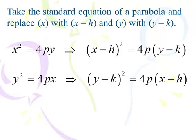What happens when we want to move the vertex from the origin? We move it to (H, K) — that'll be our new vertex. So it becomes X minus H and Y minus K. This applies whether it's a horizontal or vertical parabola. H always goes with the X and K always goes with the Y.